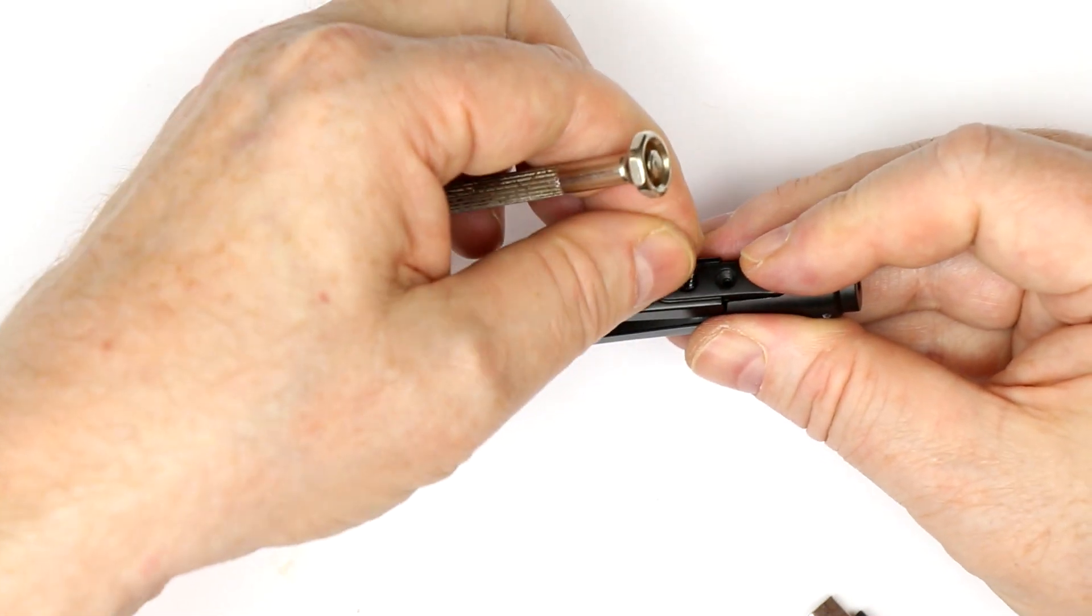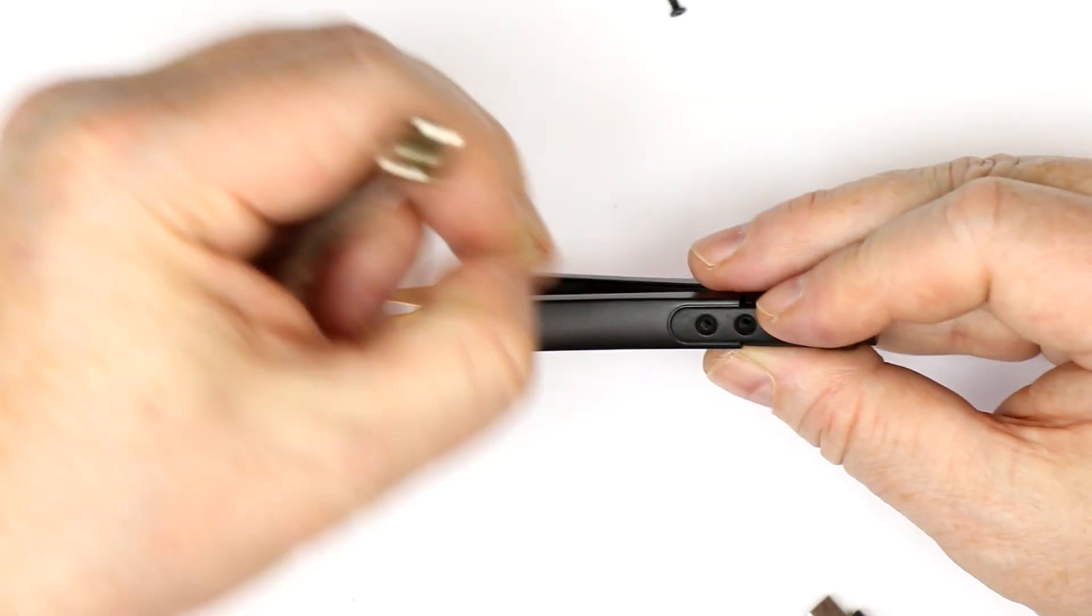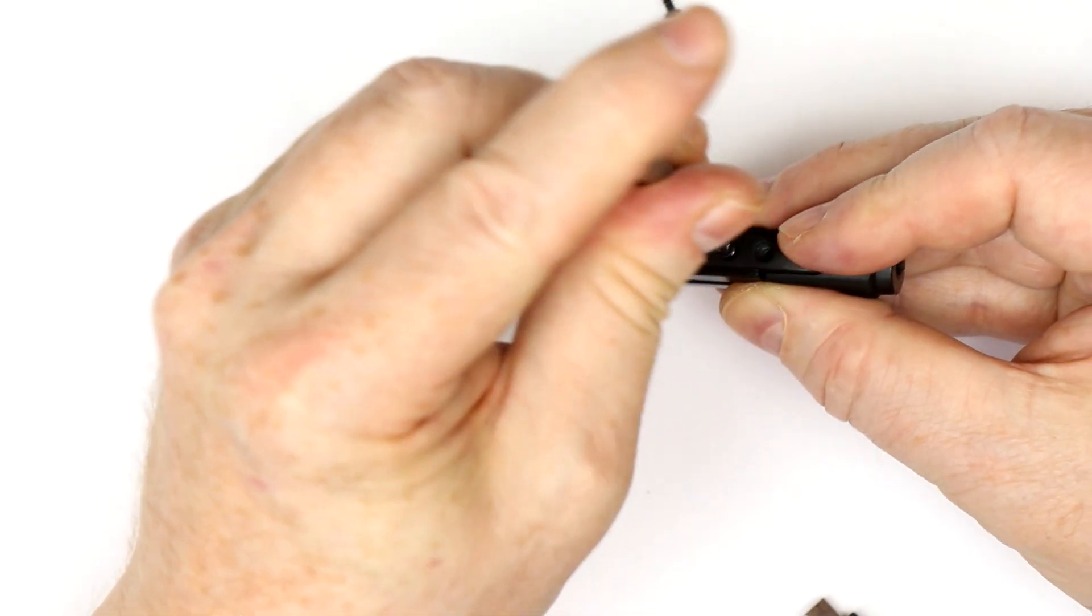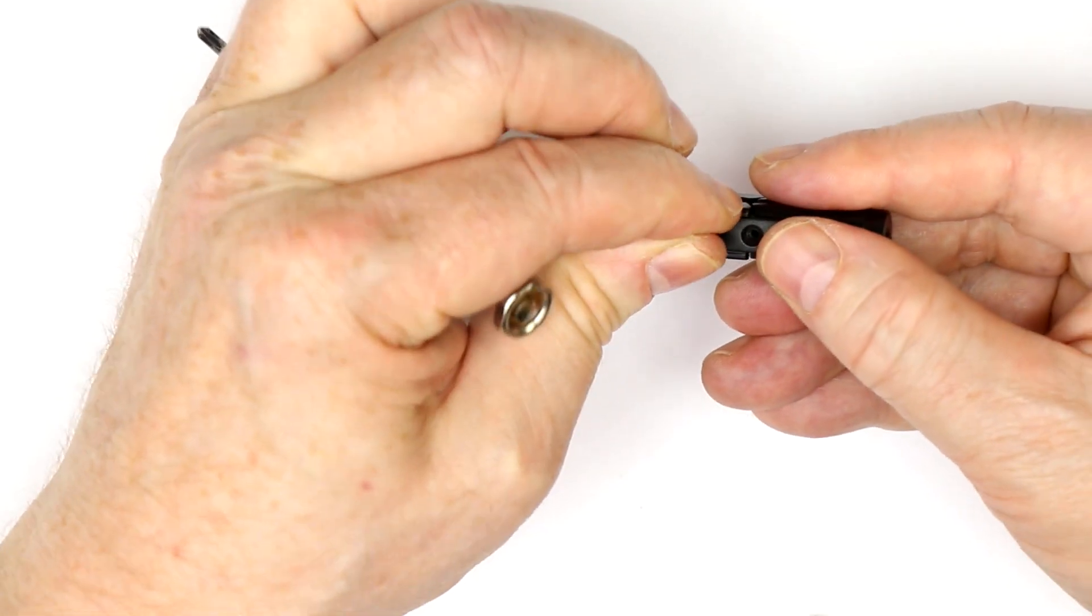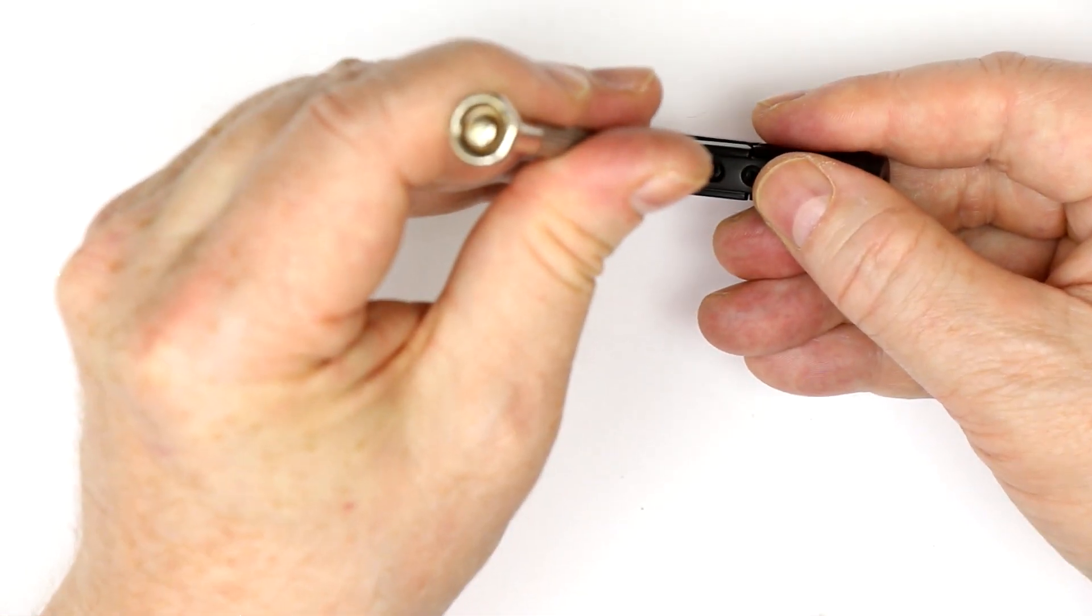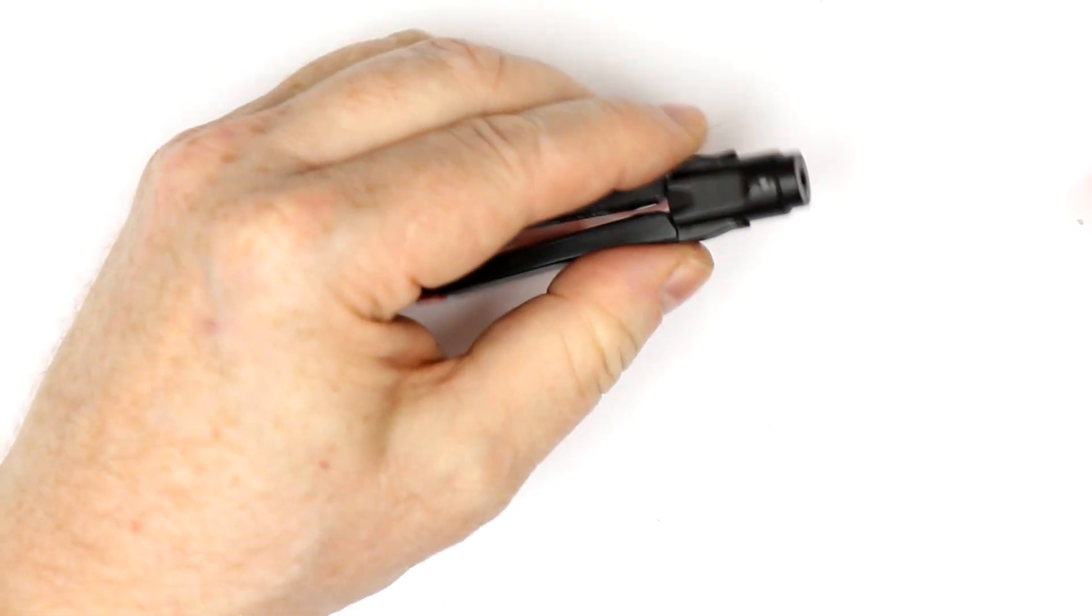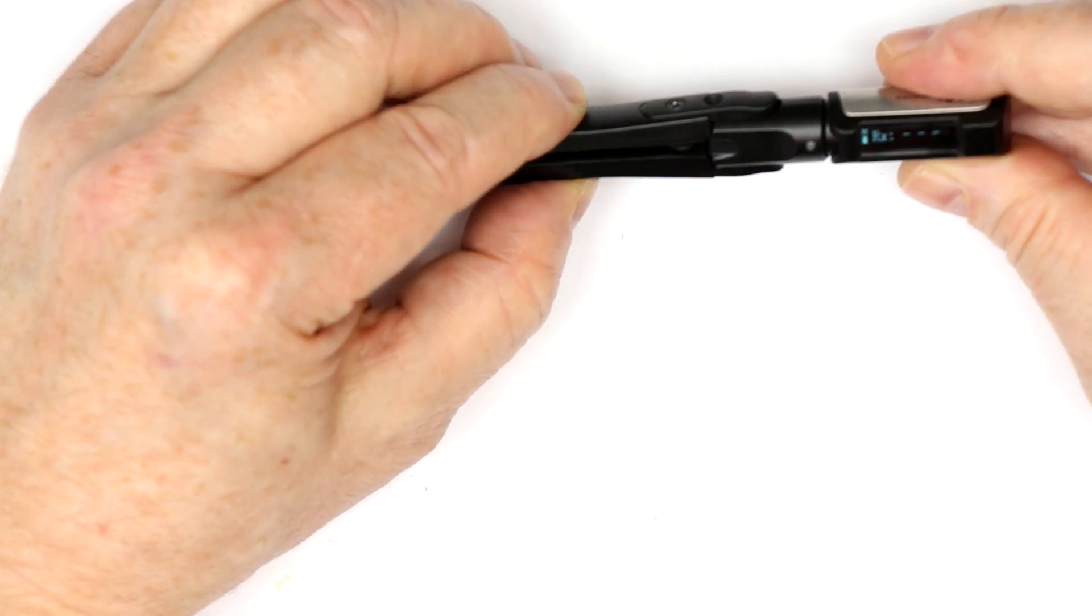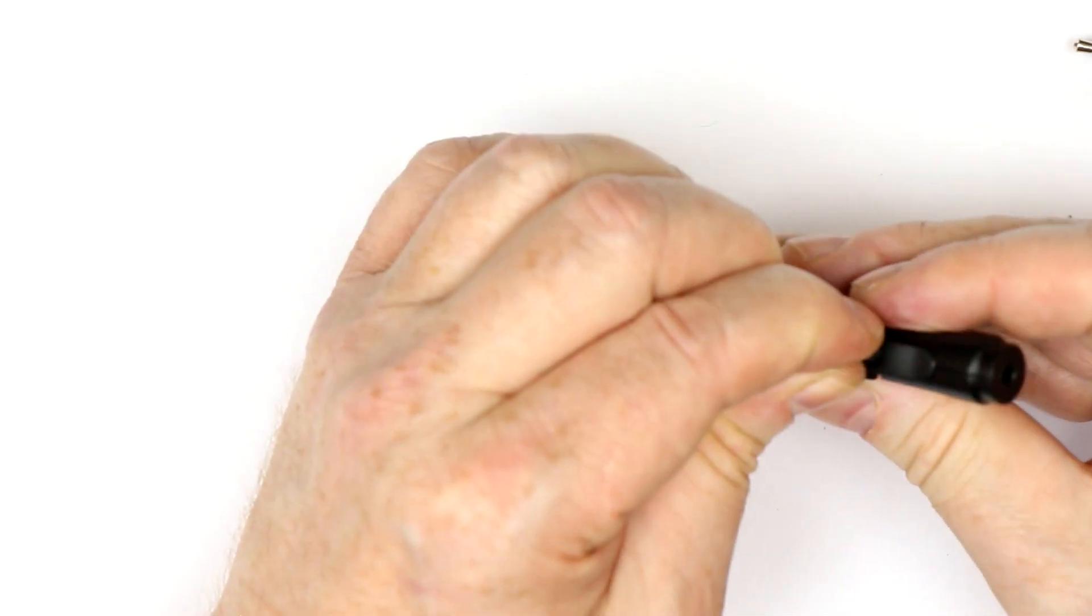Finally two screws on each side for fixing the two parts. Let's start only with the one and make a little check if it's still working. Yeah, it seems to work. Okay, so we can fix the other screws.